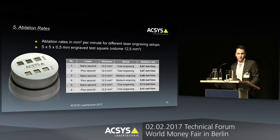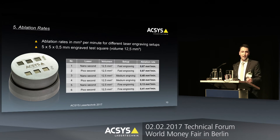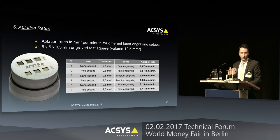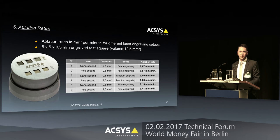The next test was to calculate the ablation rate — that means how much material we can remove in cubic millimeters per minute. Again, we tested with the three specific laser setups and calculated the ablation rate. The picosecond laser always gives us a faster engraving or higher ablation rate than the nanosecond laser, especially for fine engraving. Looking at the numbers, the picosecond laser has a three times higher ablation rate, which could result in three times faster engraving.